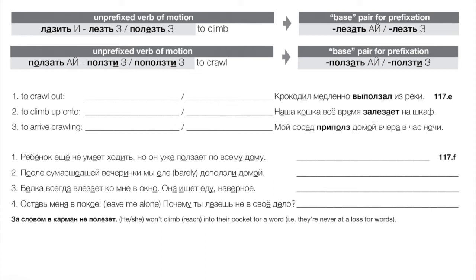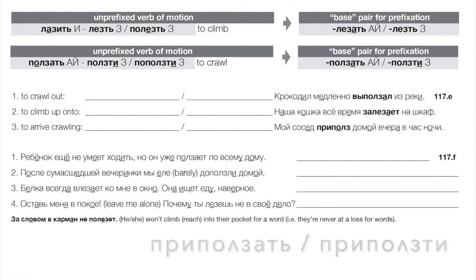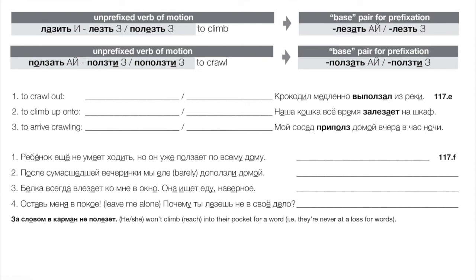To arrive by crawling — приползти. The example sounds like someone who did a bit too much partying: наш сосед приполз домой в час ночи — our neighbor crawled home at one in the morning. Unbelievable — one in the morning is so late!